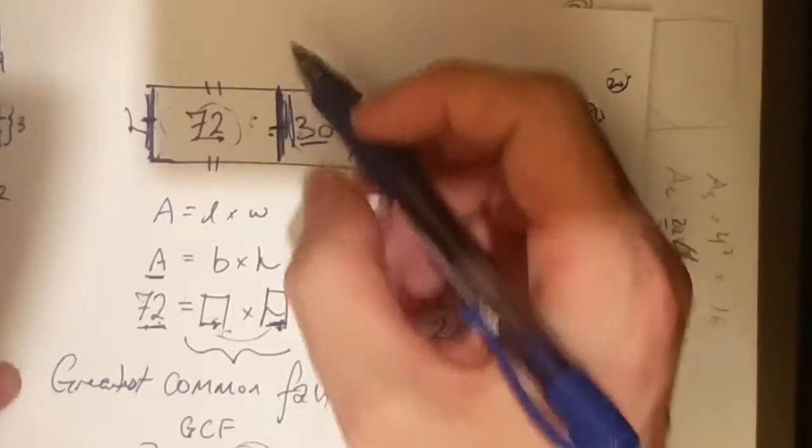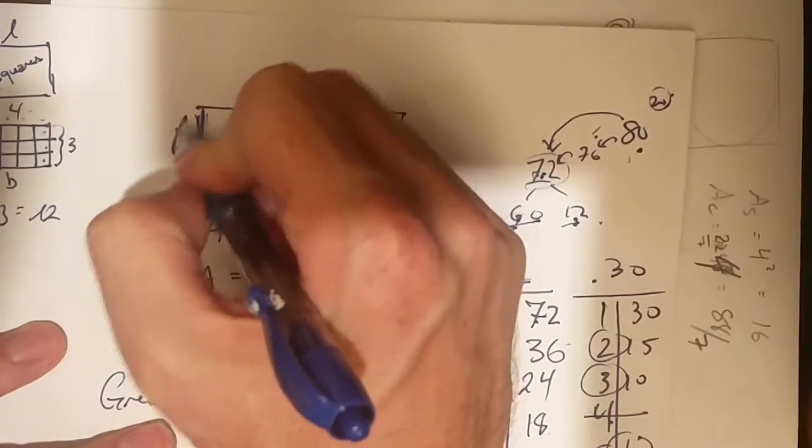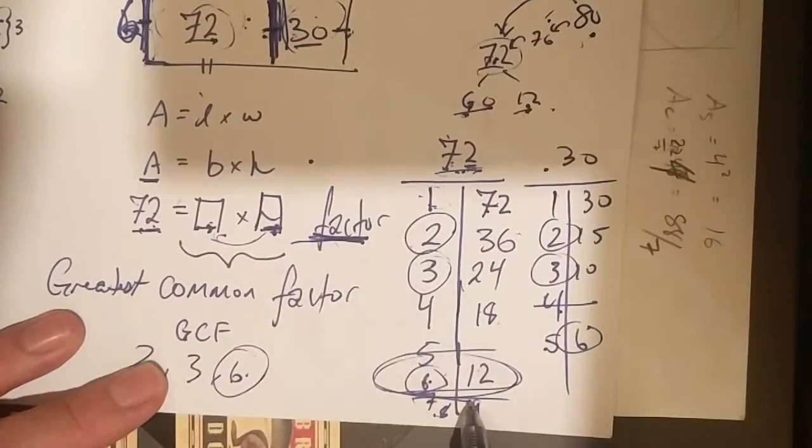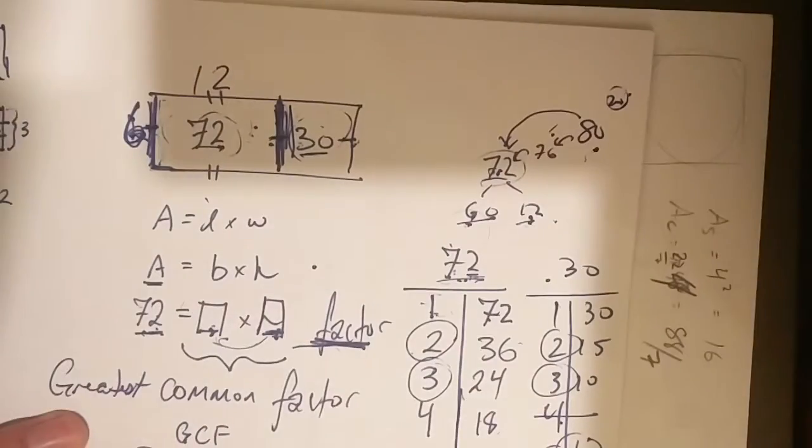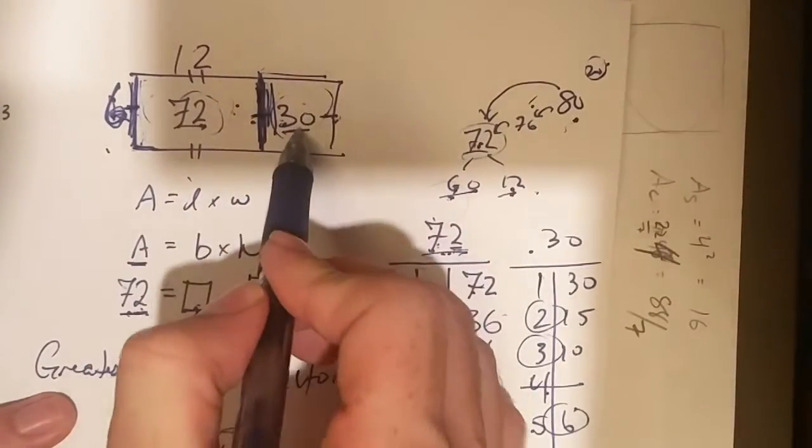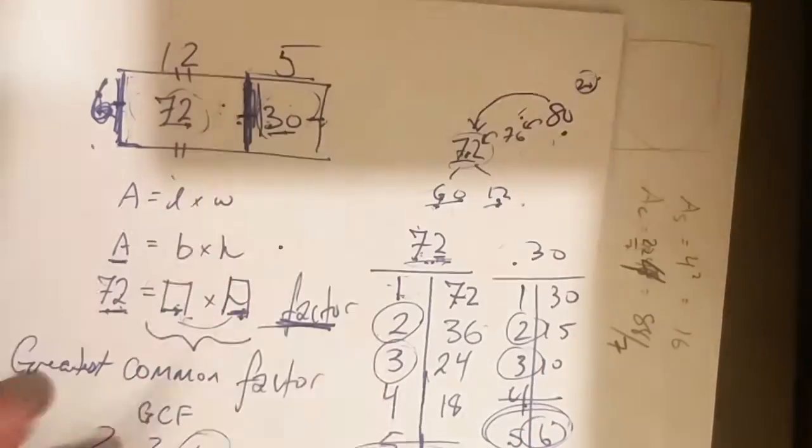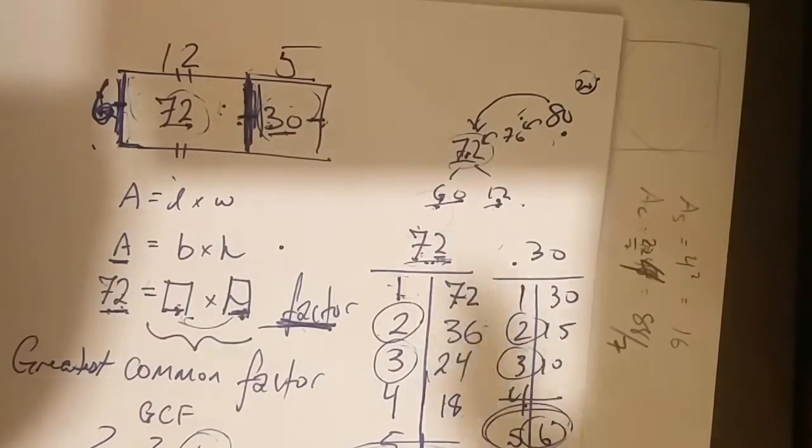So let's pick this common side which is a common factor, let's choose 6. So if my height is 6, what will the length of this rectangle be? Well I know my factors for 72 is 6 and 12, so if this is 6, this has to be 12. And then how about over here? If this has to be 6, what does this have to be to equal 30? 6 and 5. And there we have it, I found all my factors for there. Join me in the next video where I work backwards.